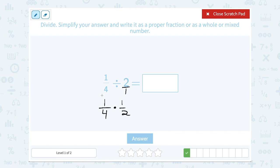And then now I can multiply straight across. On the top, 1 times 1 gives me 1. And in the bottom, or the denominator, 4 times 2 is 8.